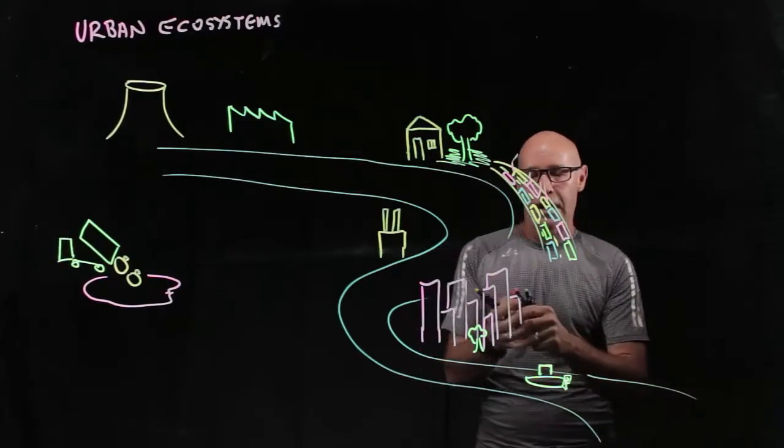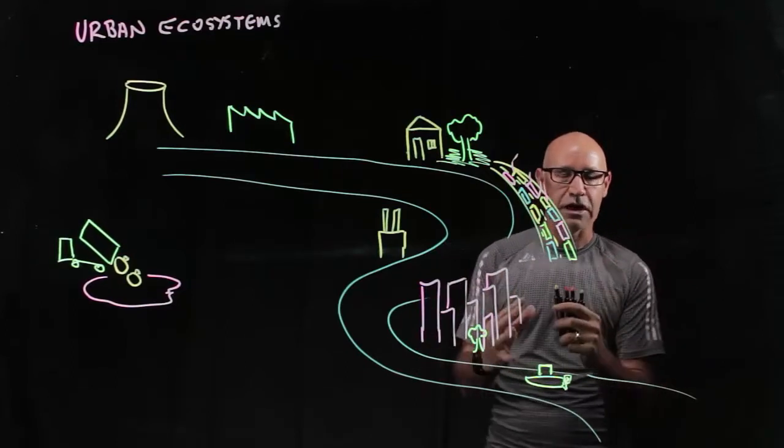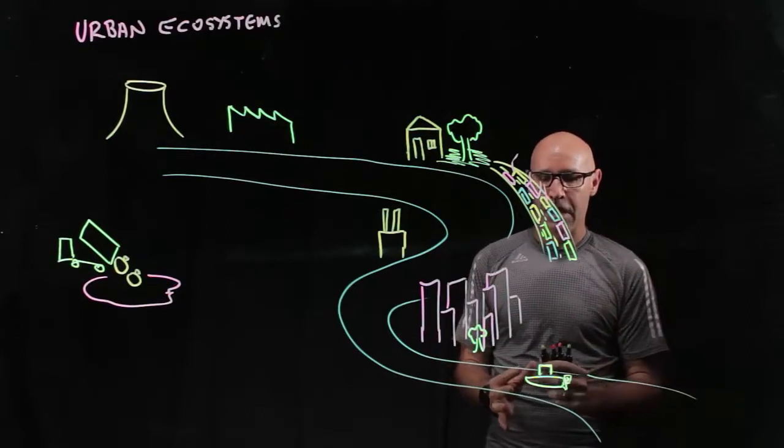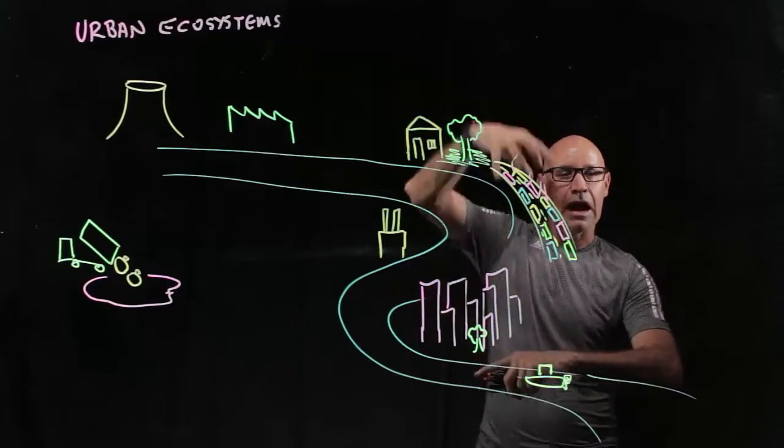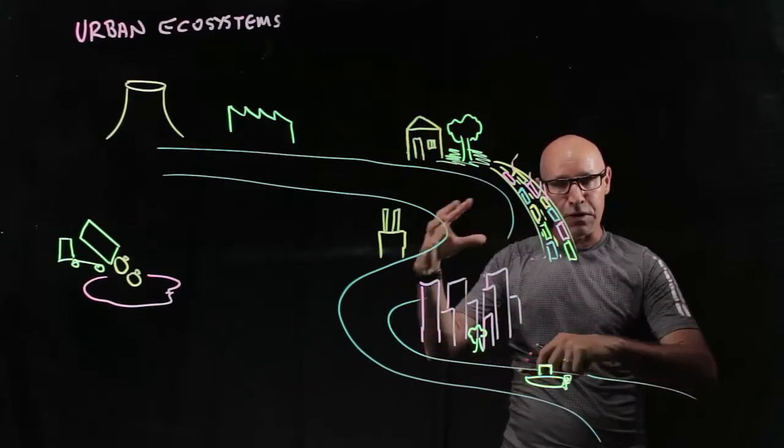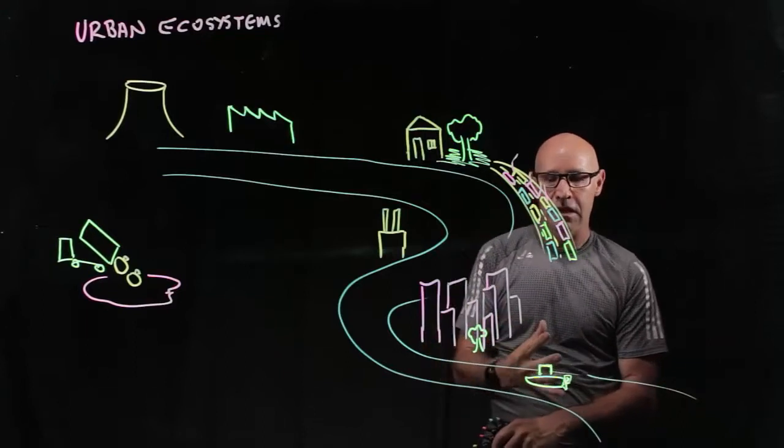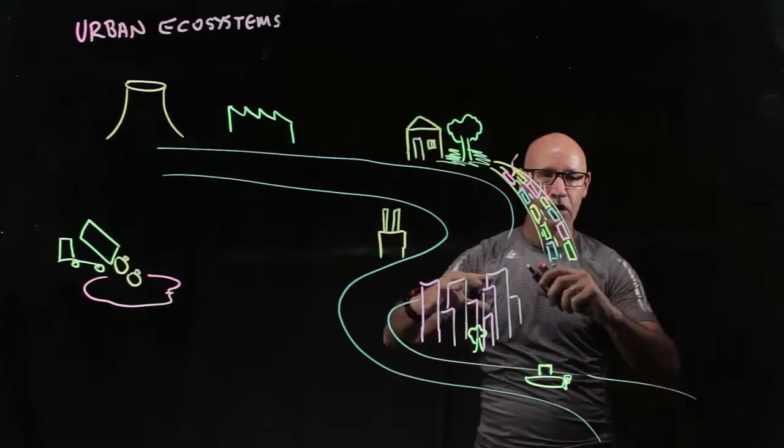In urban areas, we've got a high concentration of humans in a small area. Because of our ability to build buildings upwards, we've got this 3D stratification of an ecosystem. So we've got more and more people living on top of each other and a high concentration.